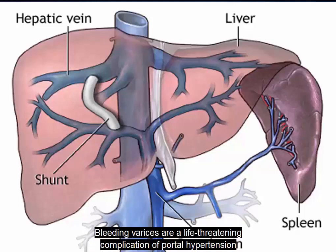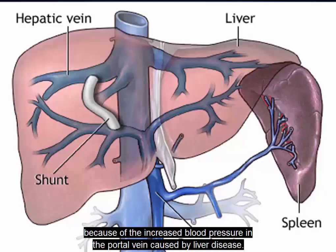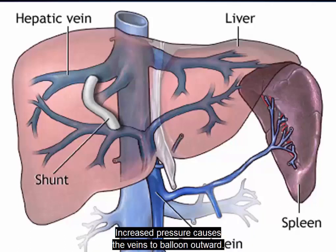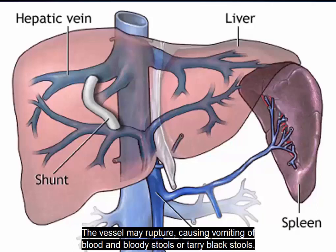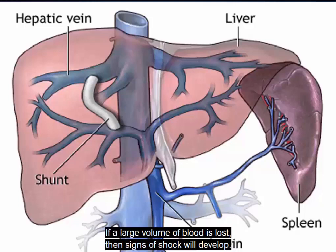Bleeding varices are a life-threatening complication of portal hypertension because of the increased blood pressure in the portal vein caused by liver disease. Increased pressure causes the veins to balloon outward. The vessel may rupture, causing vomiting of blood and bloody or tarry black stool. If a large volume of blood is lost, signs of shock will develop. Any cause of chronic liver disease can cause bleeding varices.